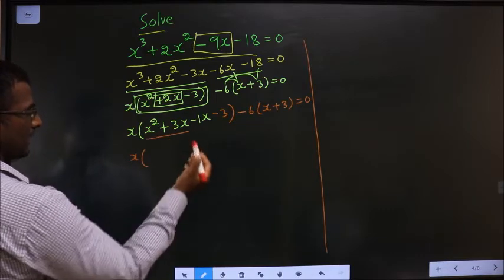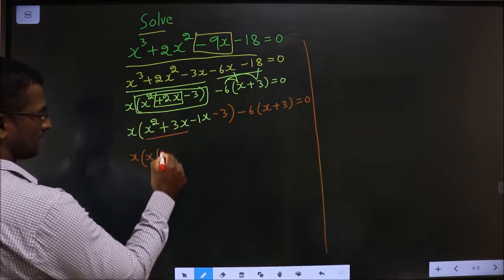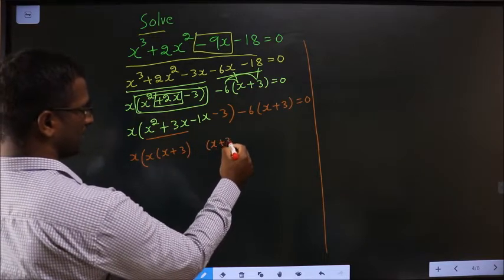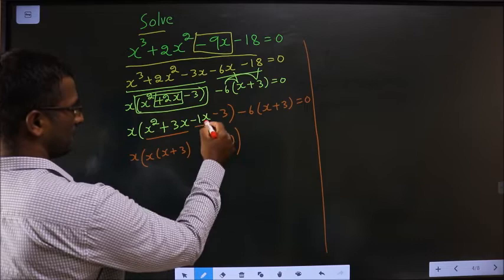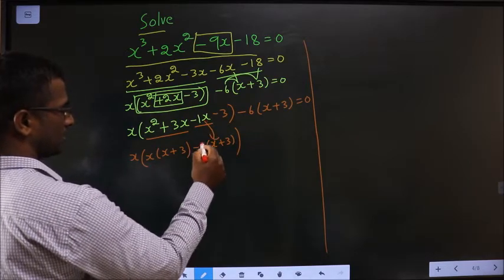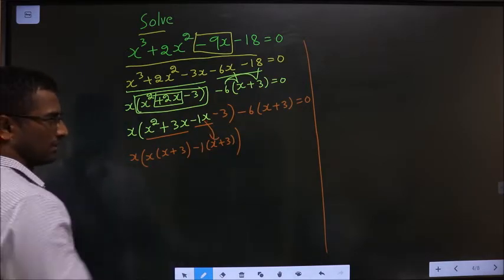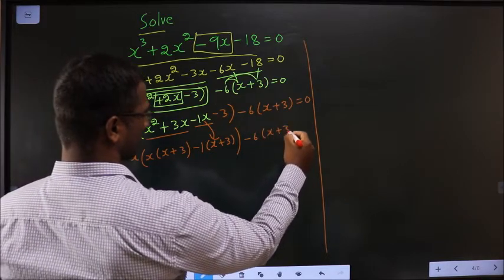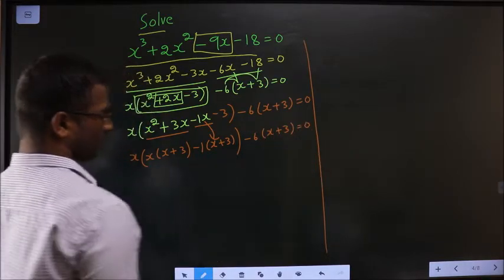Next, what should I take common from these two? x plus 3. Here you got x plus 3 means here also it should be x plus 3. From this x is gone inside means outside should be minus 1. And here no change.